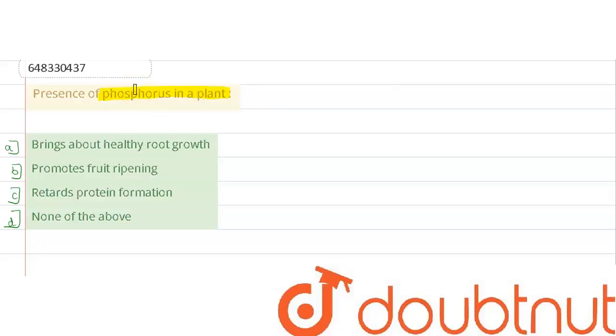Here four options are there. Option A: brings about healthy root growth. Option B: promotes fruit ripening. Option C: regards protein information. Option D: none of the above.